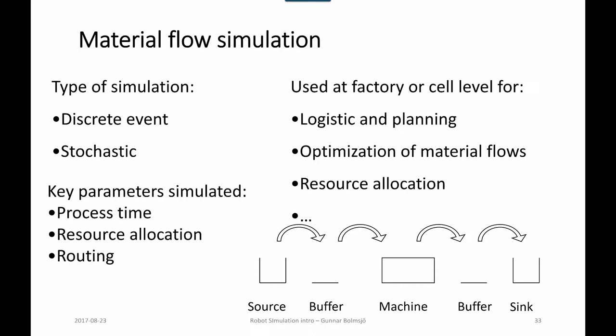These occur from time to time. Material flow simulations are usually used at the factory or cell level for logistics and planning, optimization of material flows, resource allocation, and checking how to balance a system between different processes and work styles. Key parameters relate to process time, resource allocation, and routing.